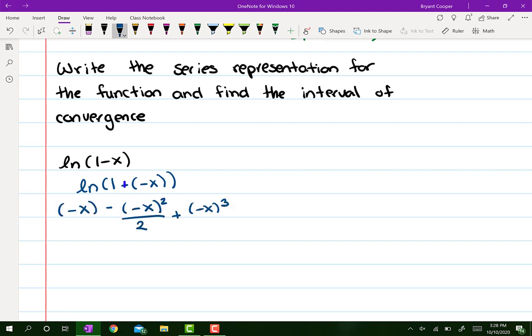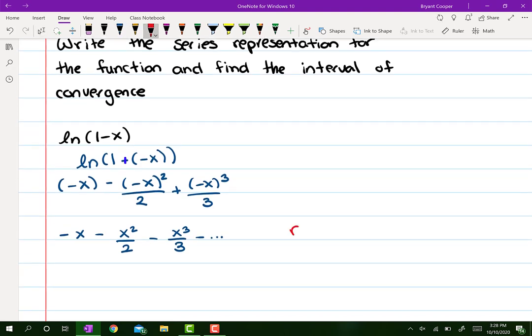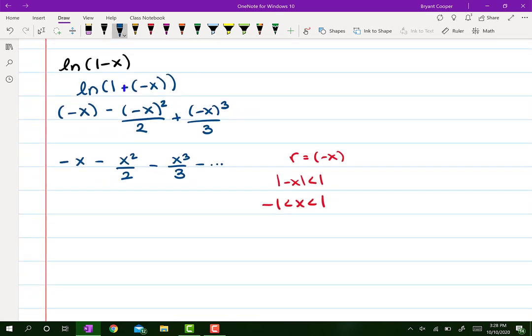So it's ln of 1 plus negative x. So wherever you see an x in our series for ln of 1 plus x, we're just going to replace that with a negative x. And then we simplify it to find a pattern. So then r equals negative x. So then you set that less than 1. So you get the interval negative 1 to 1.